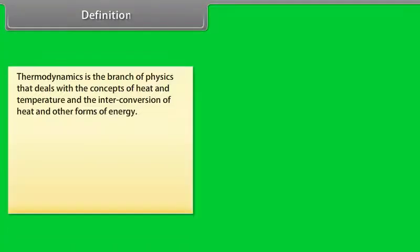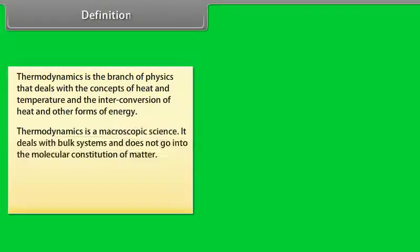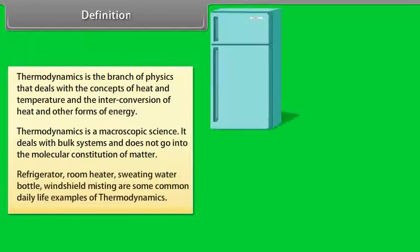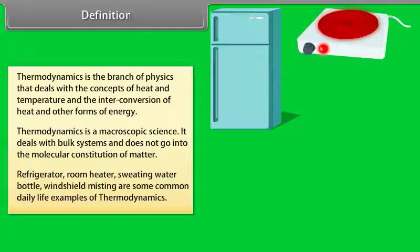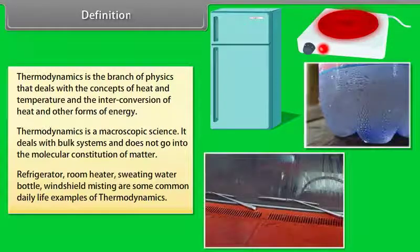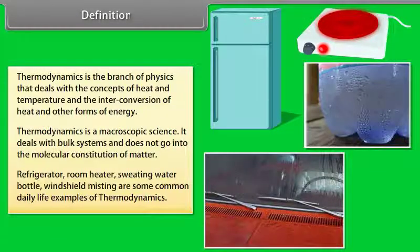Definition. Thermodynamics is a branch of physics which deals with the concepts of heat and temperature and the inter-conversion of heat and other forms of energy. Thermodynamics is a macroscopic science. It deals with bulk systems and does not go into the molecular constitution of matter. Refrigerator, room heater, sweating, water bottle, and windshield misting are some common daily life examples of thermodynamics.